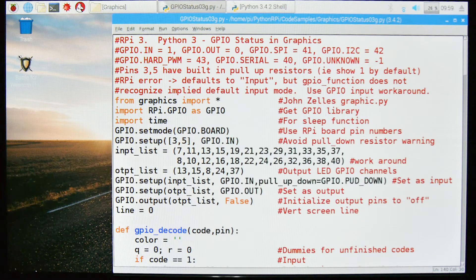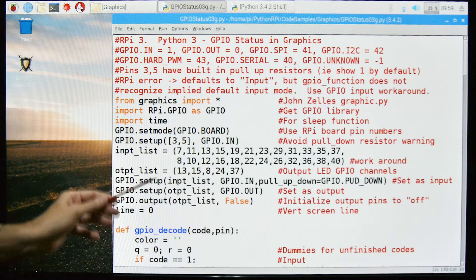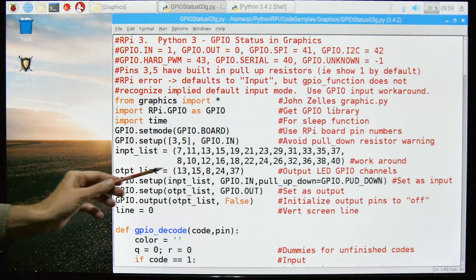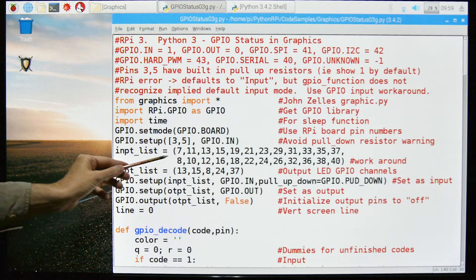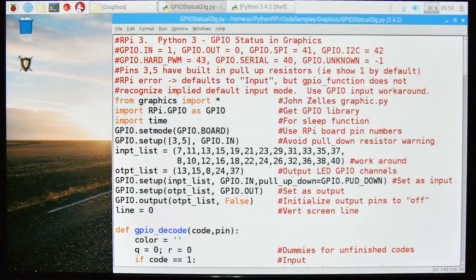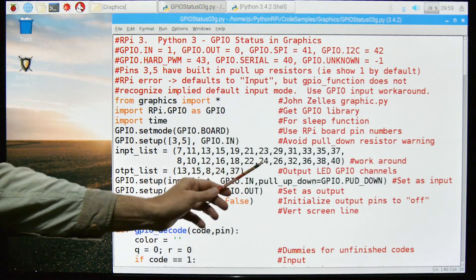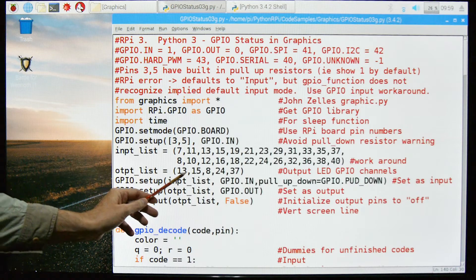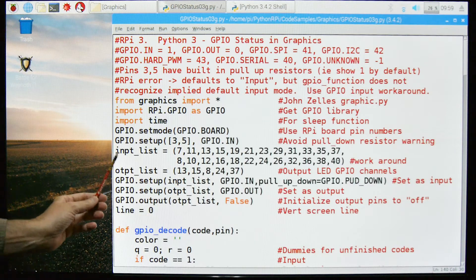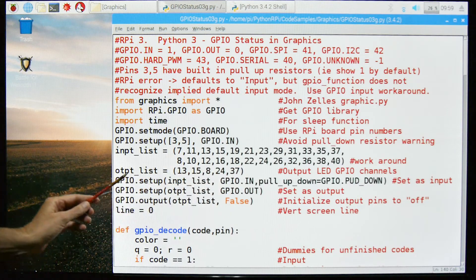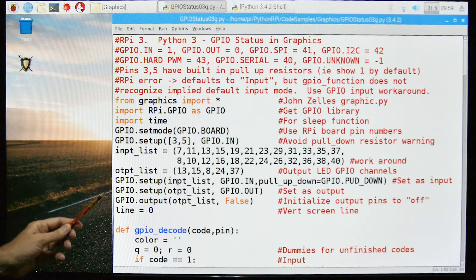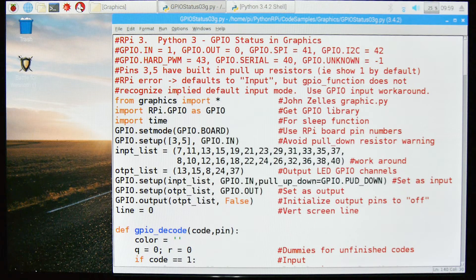We're going to do GPIO setup on pins 3 and 5 as inputs. 3 and 5 have pull-up resistors by default and they cause some problems so I'm explicitly defining them here. The rest of these I'm defining just so that I don't get error messages. So I define all of the pins as input and then I'm going to redefine some of them as output as I need. So what you can do is define everything as input and then redefine it for whatever you're going to need it - output, serial, what have you.